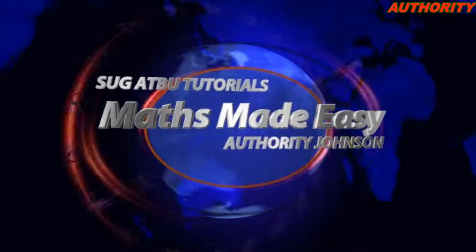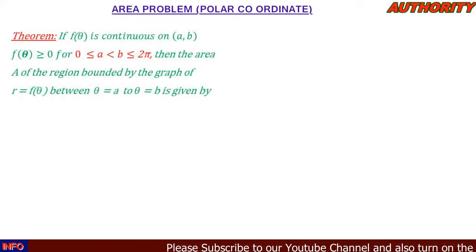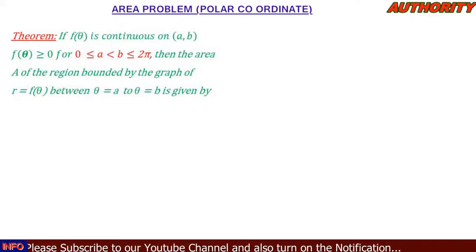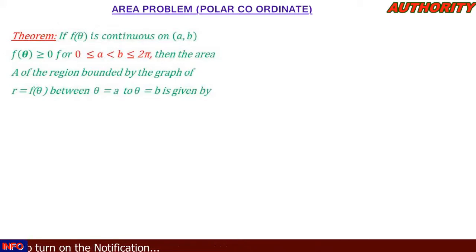Welcome again. Today let's talk about application of integrals, and under this we're going to consider area problems on polar coordinates. Now let's take a look at this theorem: if f of theta is continuous on the interval a to b, f of theta greater than 0, and b is greater than or equal to 0 but less than or equal to 2pi, then the area A of the region bounded by the graph of r equal to f of theta between theta equal to a and theta equal to b is given by: